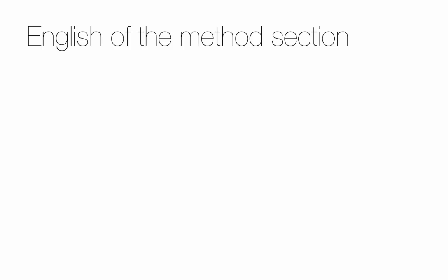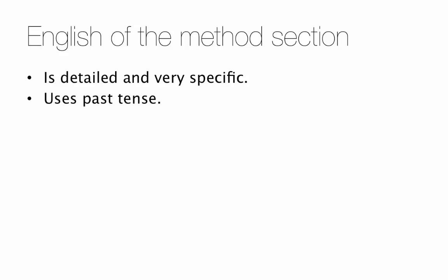Here are a few points about the English of the Methods section. First, it should be detailed and specific. Include all the details about your experimental conditions and exact values. Don't use words like 'about.' Second, the Methods section uses past tense. Almost everything will be in past tense.